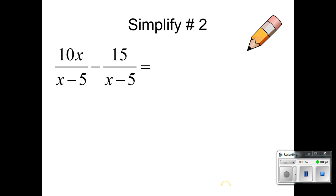Let's simplify number two. The like denominators x minus 5 and x minus 5 are the same so I can subtract the numerators. So this would say 10x minus 15 over x minus 5. Now this looks like I might be able to reduce the top. They both have a 5 in common so I'm going to take out the 5 and I would get 2x minus 3 over x minus 5. Nothing seems to cancel so that would be my final answer.